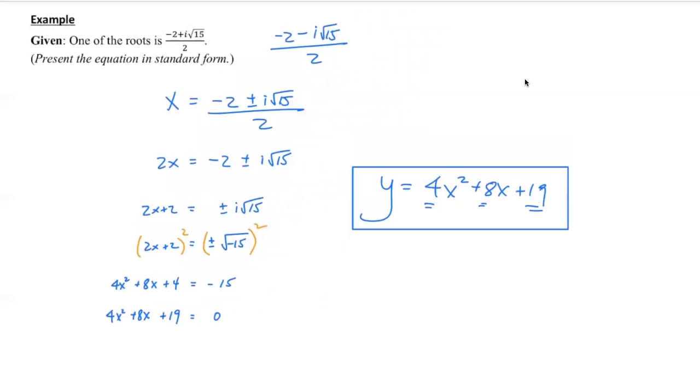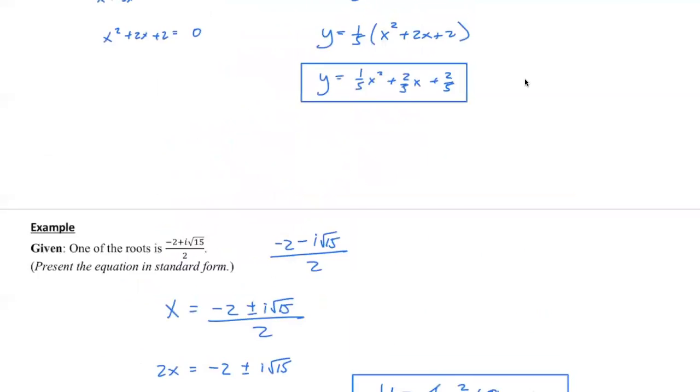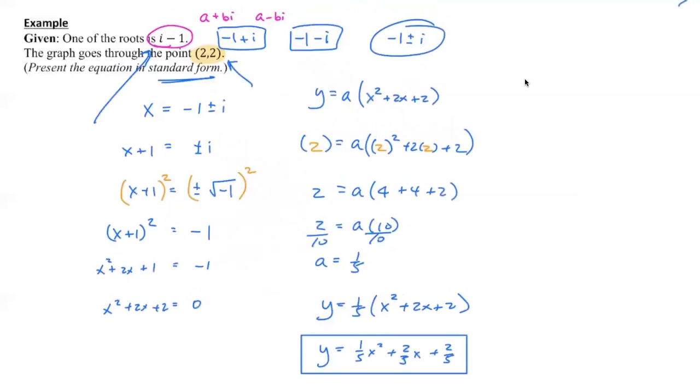If you look at this example and the previous example, you can see the parallel right here. You've got the roots, you've got the i, so you know it's going backward.